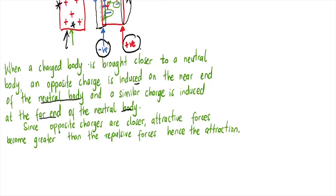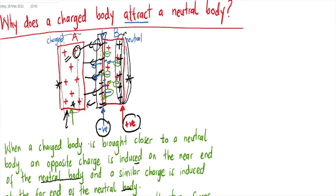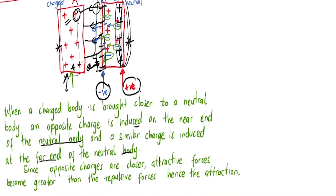Since opposite charges are closer, the attractive forces become greater than the repulsive forces. Take note: the positives and negatives create an electric field and they are closer to each other than the positive charges at the far end. The positive charges at the far end are being repelled by the positive charges here, but the distance between these positives and the negatives at the near end is smaller.